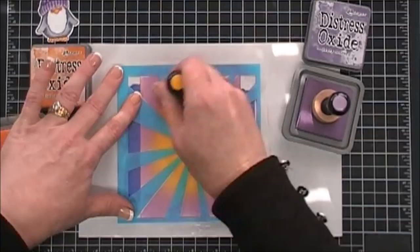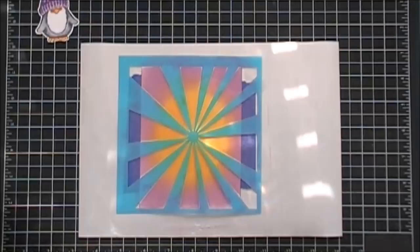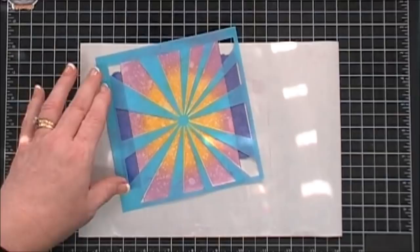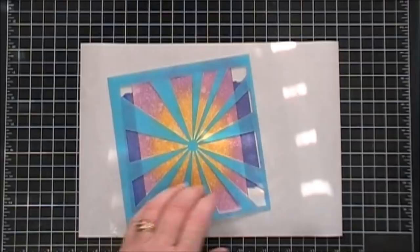But once my blending's done, I'm going to spray it with my distress sprayer, add some water and a little bit of texture, and then using a towel, I'll just dab off all the excess. Lovely. Okay, we'll just remove the tape off of our panel here. And I didn't mention, but the panel that I used, the Strathmore Bristol Smooth cardstock, it blends so well with Oxide Inks.